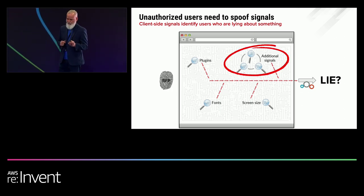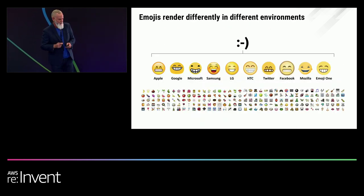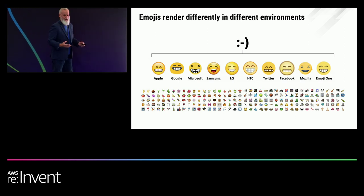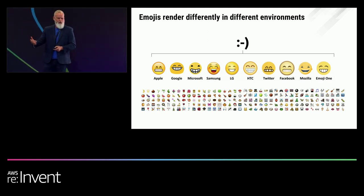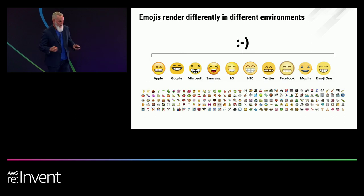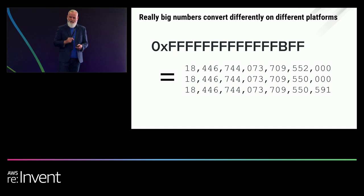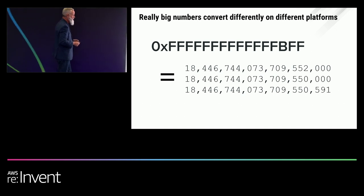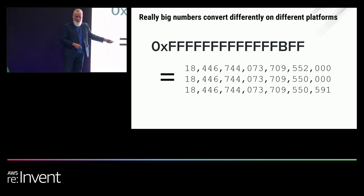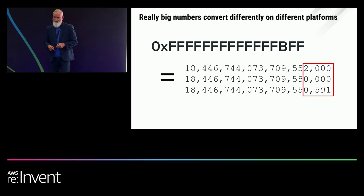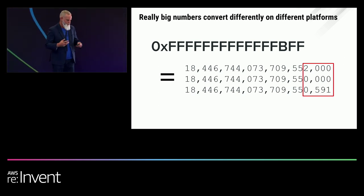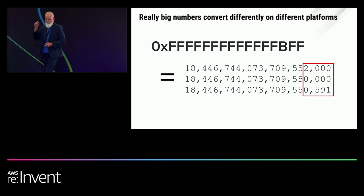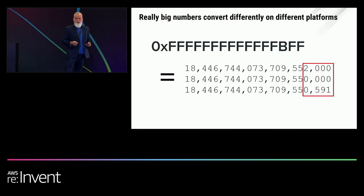The real power is in our additional signals — I'm going to cover two of those. First is our emoji signal: it leverages the fact that emojis render differently on different platforms. So if the platform is rendering emojis like Edge, but the user agent string purports to be Firefox, we know they're lying about the user agent string — and your customers don't lie about the user agent string. Similarly, we take a large hexadecimal number and ask the browser to convert it to decimal — you get a number on the order of 18 quintillion. Different browsers come up with different answers to that large floating point math problem, largely because of the way they round. So just like the emoji signal, if they purport to be Firefox but they're doing floating point math like Chrome, we know they're lying.